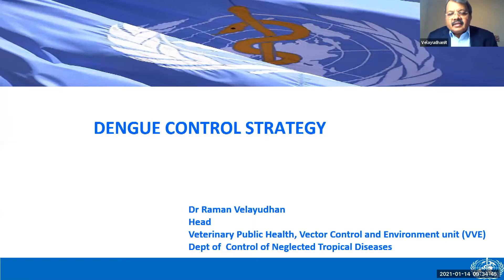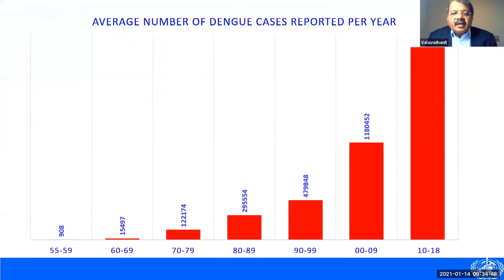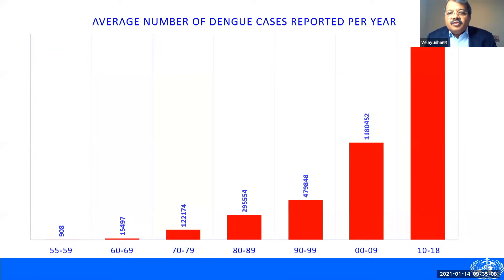Dengue is the only communicable disease in recent memory to have increased exponentially. If you look at this graph, which shows the average number of cases reported to WHO per year in 10-year periods, you can see how cases have increased. From 2000 to 2019, dengue has grown almost six-fold all over the world. This is a huge challenge.